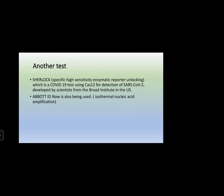Another test is SHERLOCK — Specific High-sensitivity Enzymatic Reporter unLOCKing — developed in the US, which uses enzymatic reporters or genes that are unlocked for detection. Cas12 is used for detecting the SARS-CoV-2 gene. Another isothermal technique is the Abbott ID Now, which is basically an RT-LAMP test.